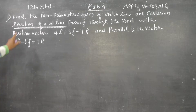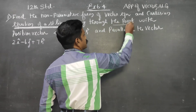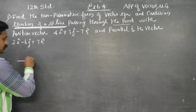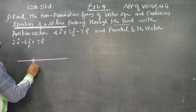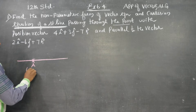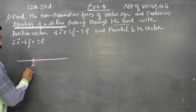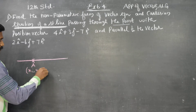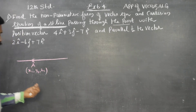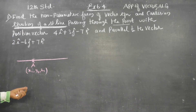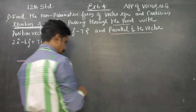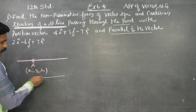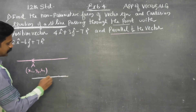We are on model sum number 4: equation of a straight line passing through a given point. Before entering into the sum, consider this straight line. This red colour line passes through a given point — let it be A, with coordinates X1, Y1, Z1. A line passes through a point X1, Y1, Z1. The vector is going to represent X1, Y1, Z1, K. A straight line passes through a given point.